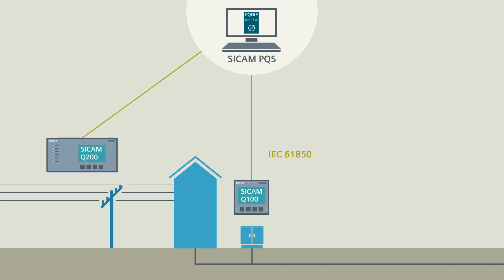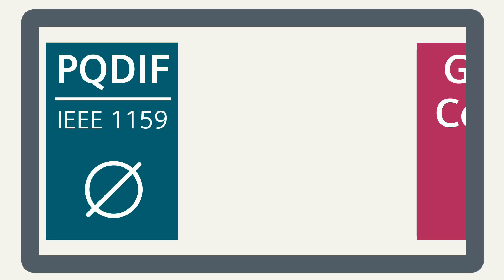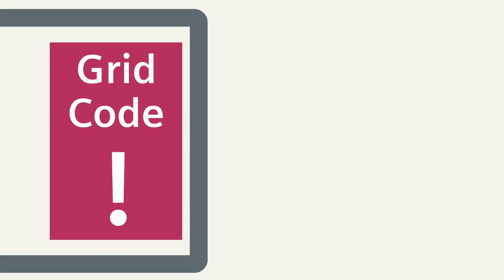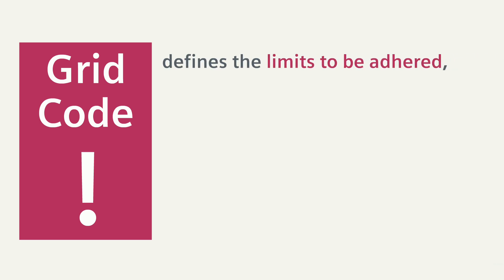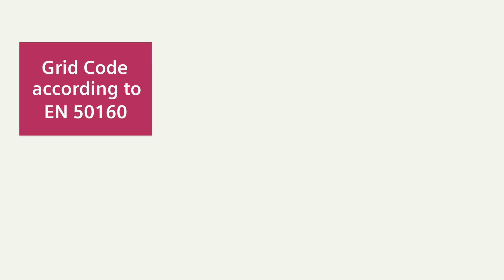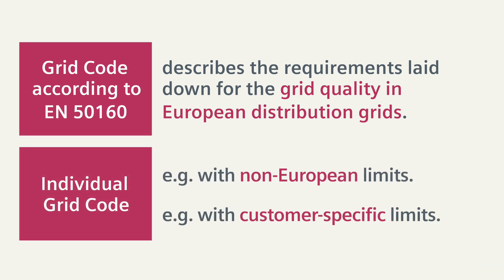CCAM-PQS enables all power quality data from the field level to be centrally gathered and archived for a multitude of connected CCAM power quality devices. CCAM-PQS subsequently assesses the gathered data on the basis of grid codes. A grid code defines the limits to be adhered to for all measured quantities, like the maximum permissible level of harmonic oscillations. The grid code defined by the EN 50160 standard describes the requirements laid down for grid quality in European distribution grids. You can also define your own grid codes for applications with individual quality requirements.